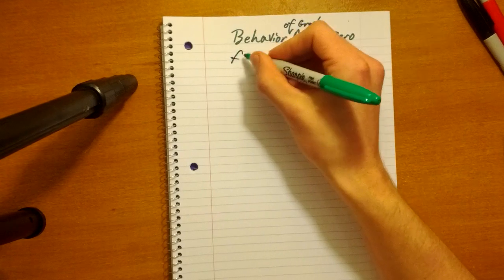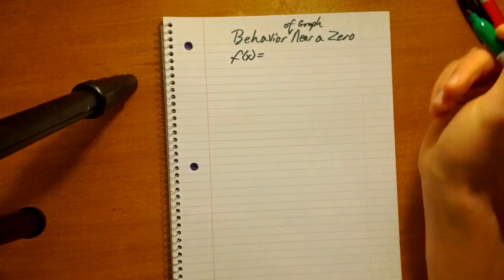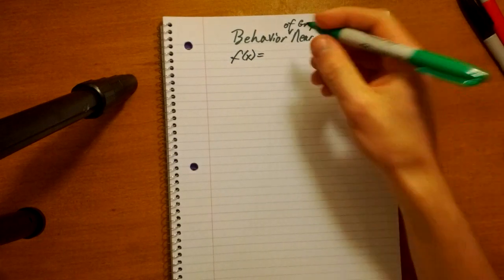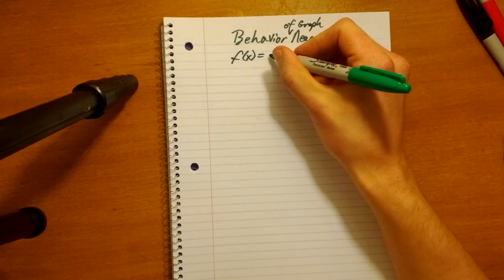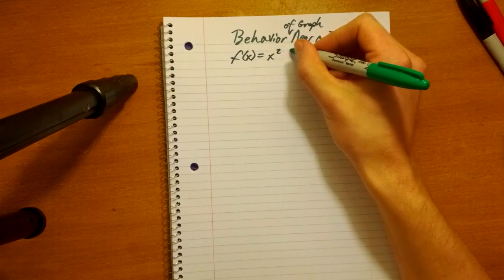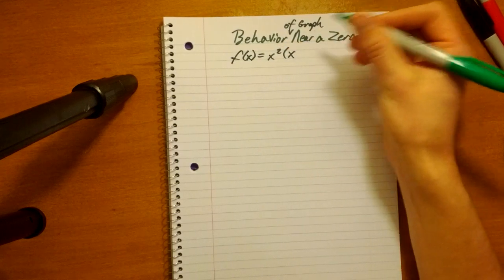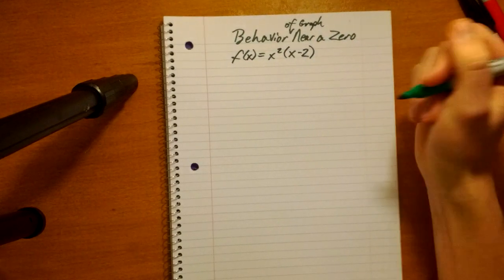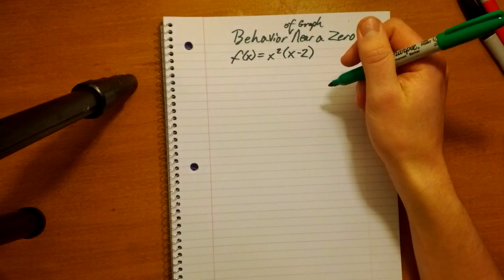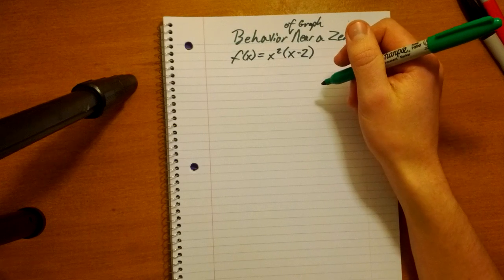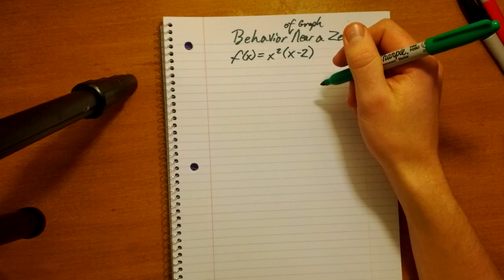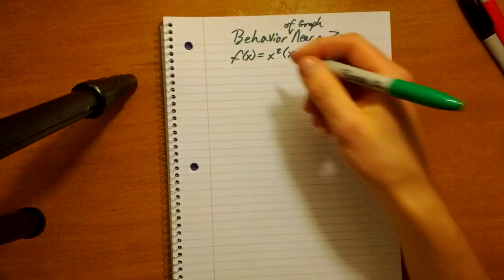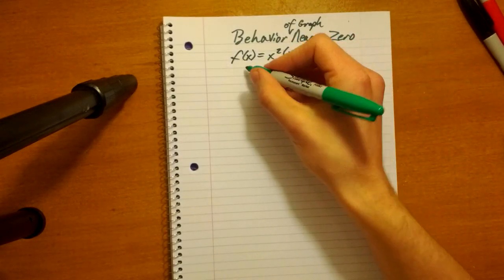So say we are given a polynomial function. Yes, we are talking about polynomial functions still, and we're finding out how to graph them piece by piece. And today we are taking the piece of being near a zero, aka x-intercept, which hopefully you learned about in another video that I made.